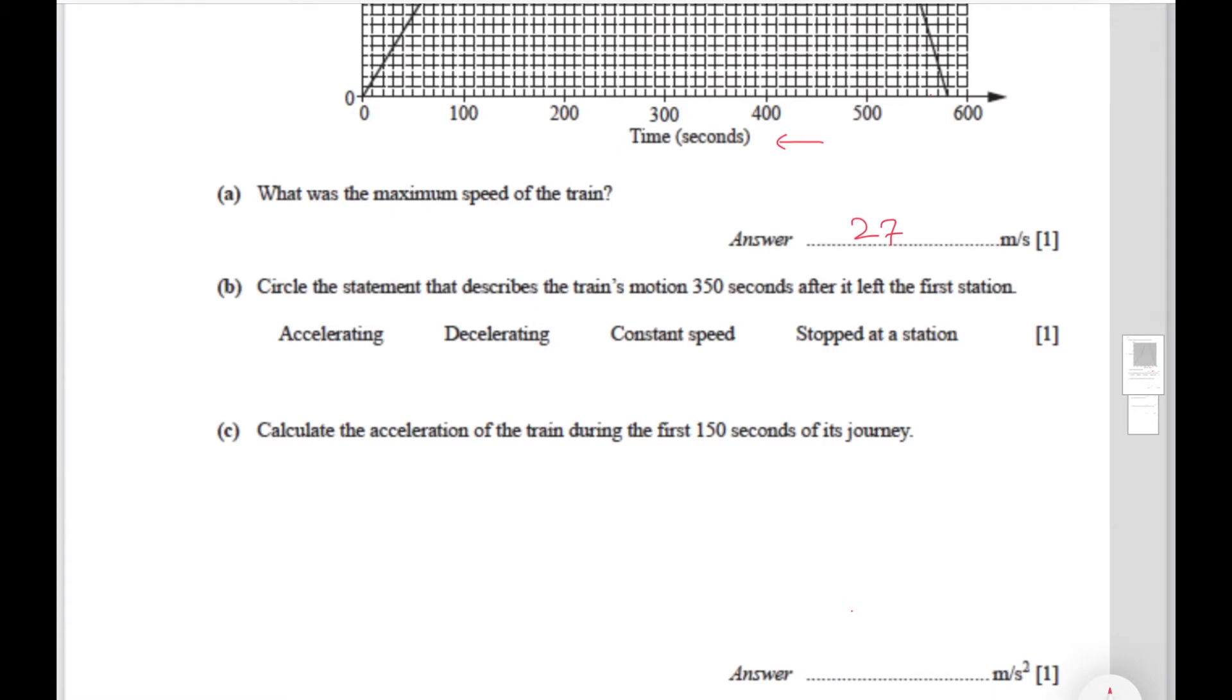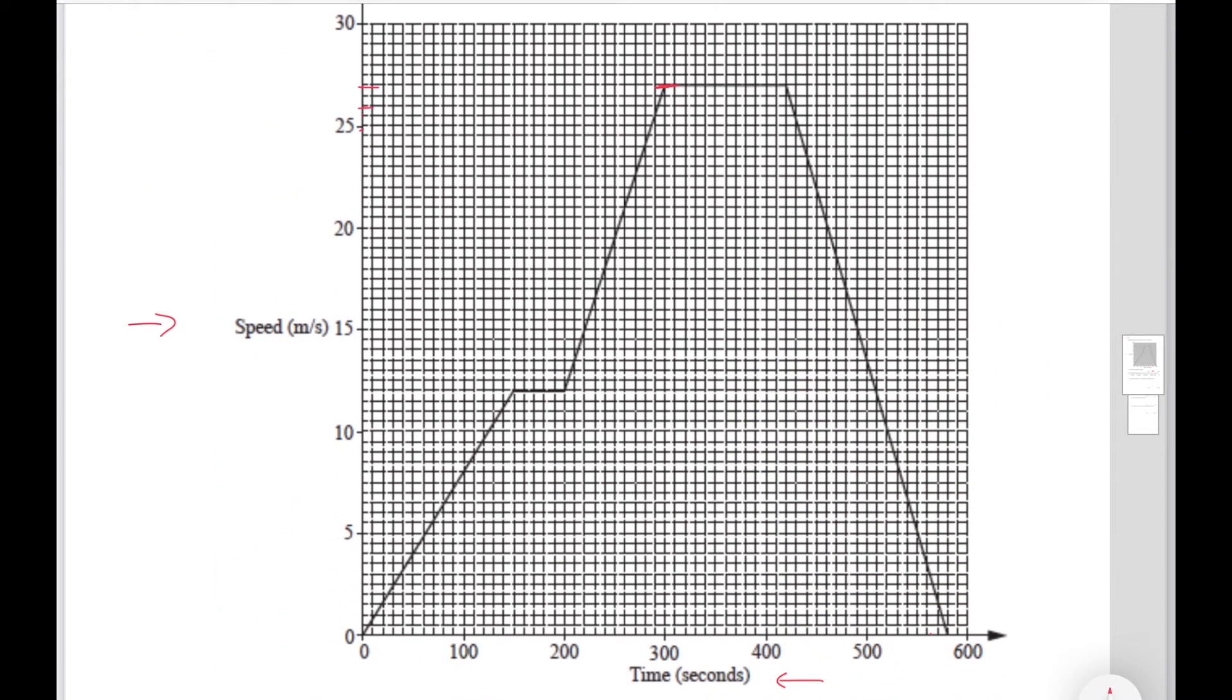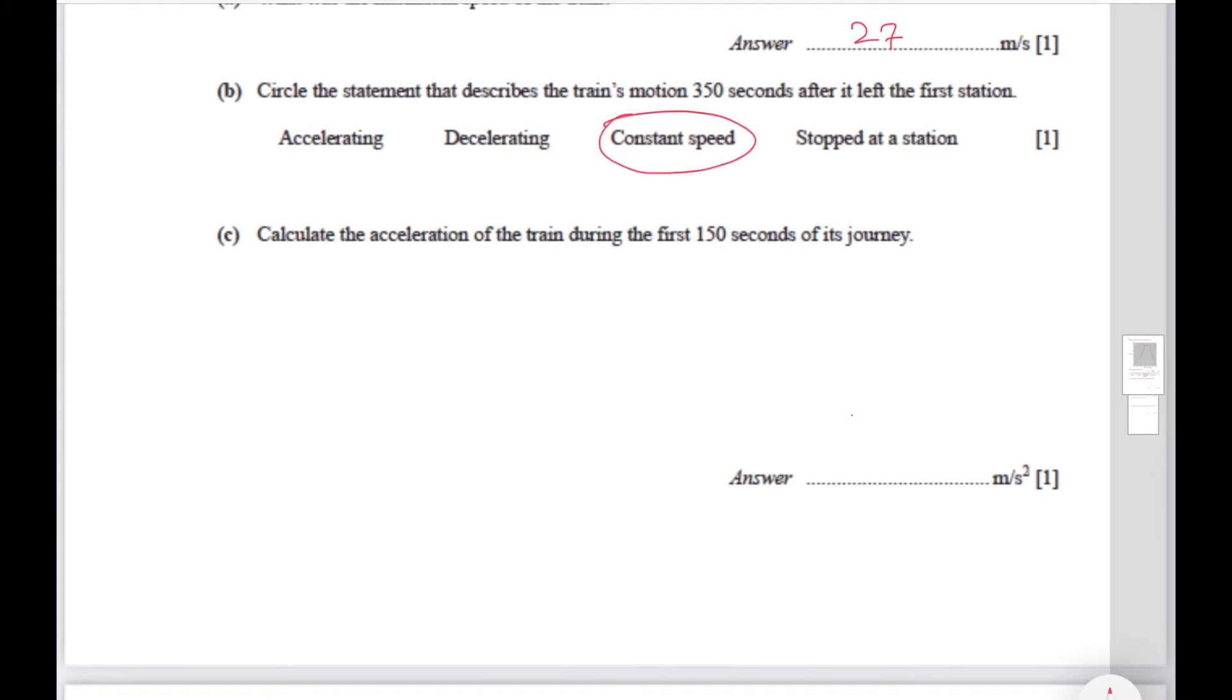Part B says circle the statement that describes the train's motion 350 seconds after it left the first station. That means at 350 seconds, roughly about over here, this portion represents constant speed. So you circle constant speed.